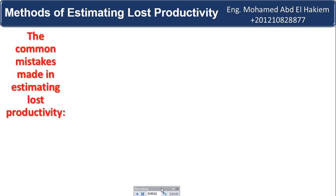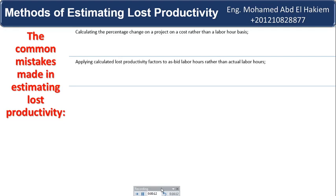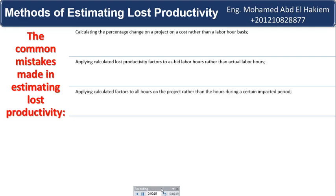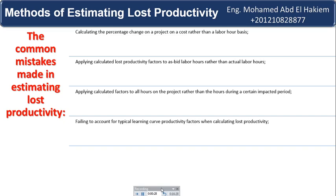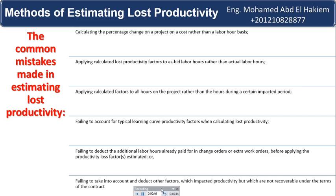Common mistakes made in estimating lost productivity include: calculating the percentage change on a project on a cost rather than a labor hour basis; applying calculated lost productivity factors to as-bid labor hours rather than actual labor hours; applying calculated factors to all hours on the project rather than only the hours during a certain impacted period; failing to account for typical learning curve productivity factors; failing to deduct the additional labor hours already paid for in change orders or extra work orders before applying productivity loss factors; and failing to take into account and deduct other factors which impacted productivity but which are not recoverable under the terms of the contract.